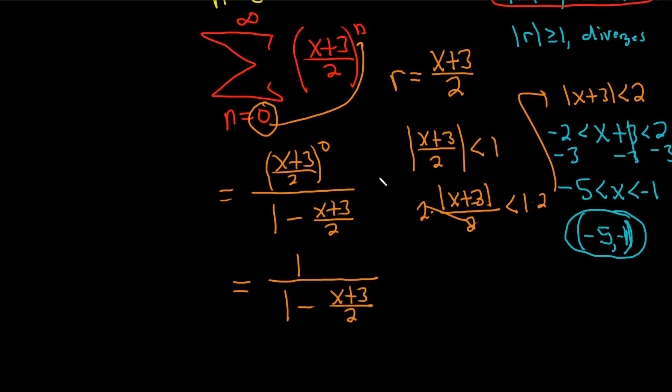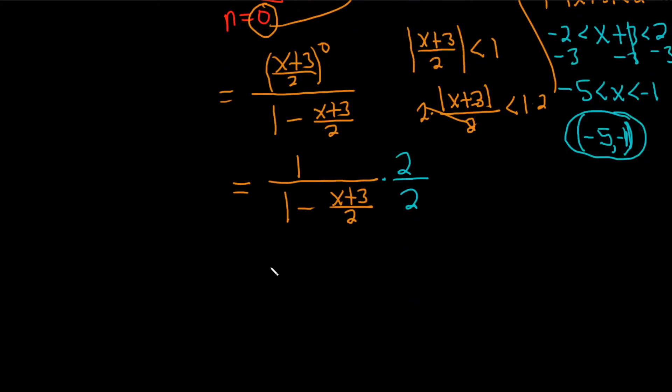We can clean this up, and I think maybe the fastest way to do it is to multiply by 2/2. When we do that, check this out, in the numerator, we get 2 times 1, which is 2. In the denominator, we have to actually distribute the 2, so 2 times 1 is going to give us 2. And then here, the 2's cancel, so we're left with minus, and careful, this is actually in parentheses.